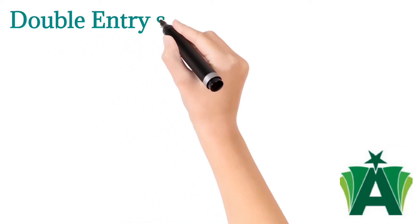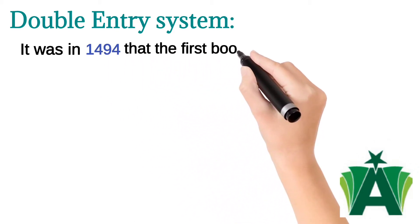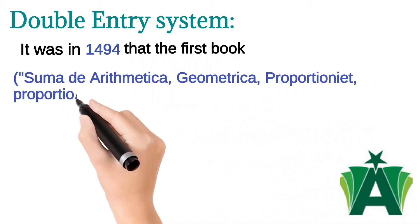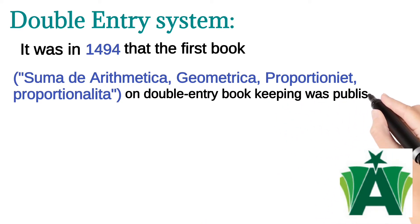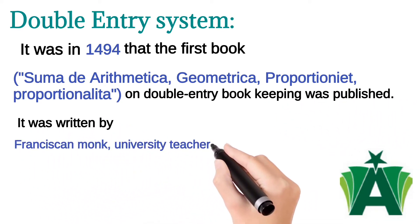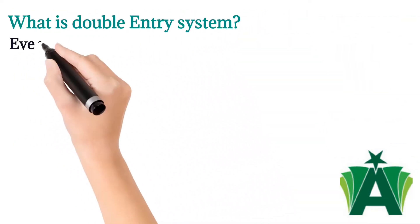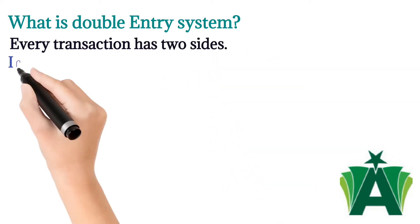Double entry system: It was in 1494 that the first book, 'Summa de Arithmetica, Geometrica, Proportioni et Proportionalita,' was written by Franciscan monk, university teacher and scholar Luca Pacioli. What is double entry system? Every transaction has two sides.